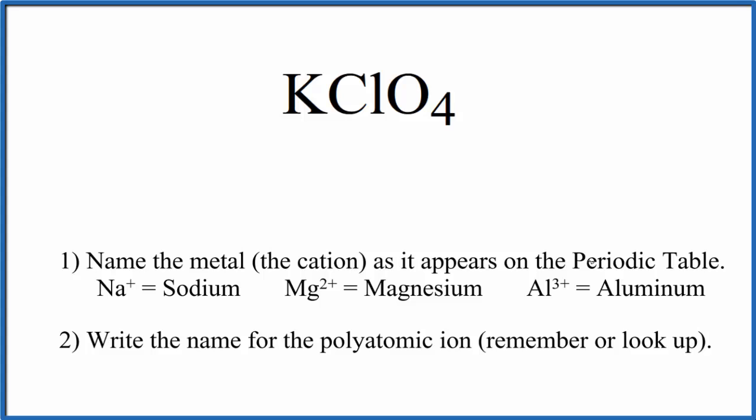So because of that, we're going to use these rules to write the name for KClO4. First, we name the metal as it appears on the periodic table. K, that's potassium.